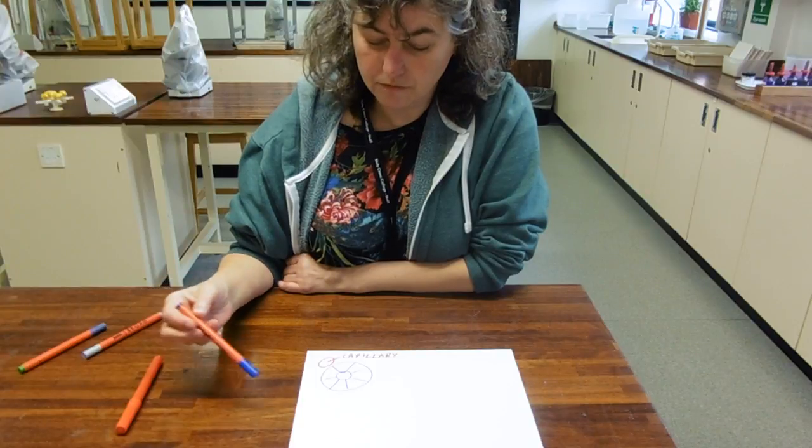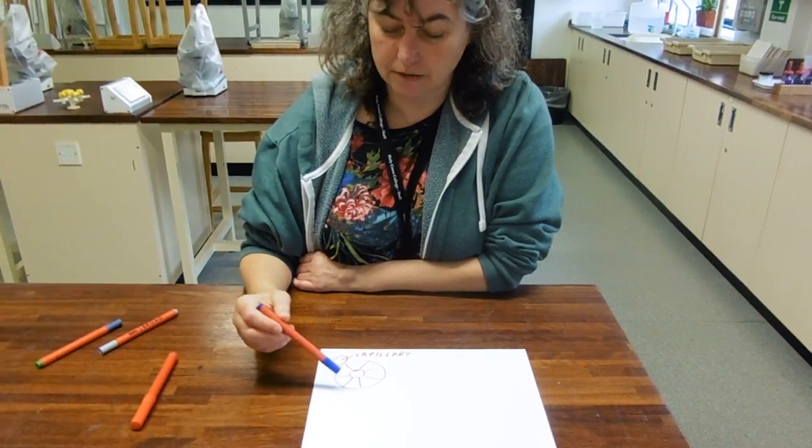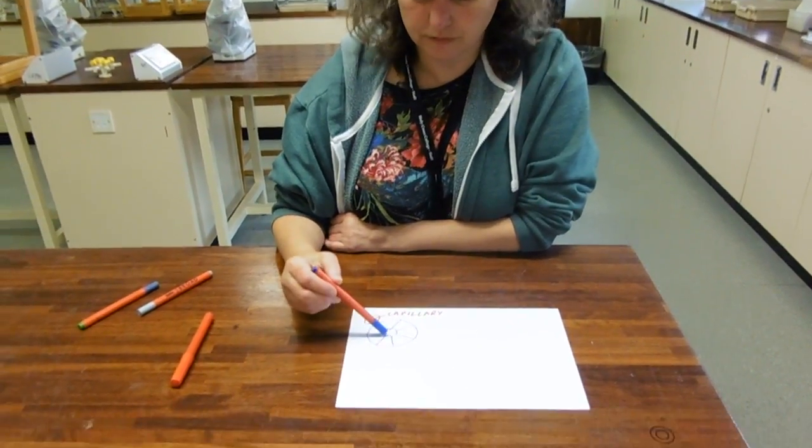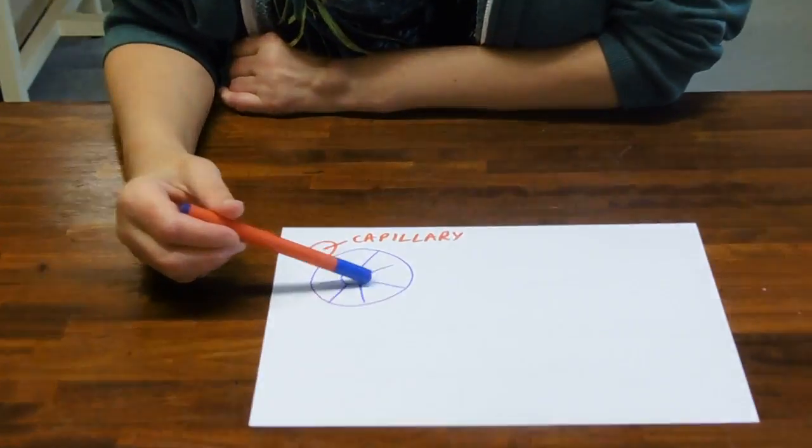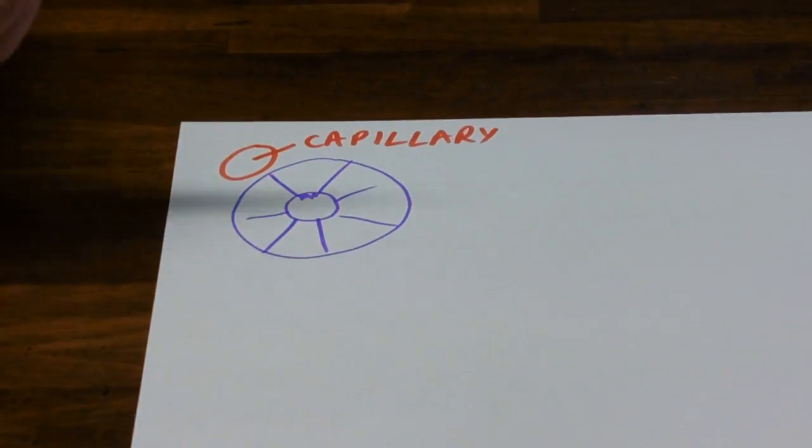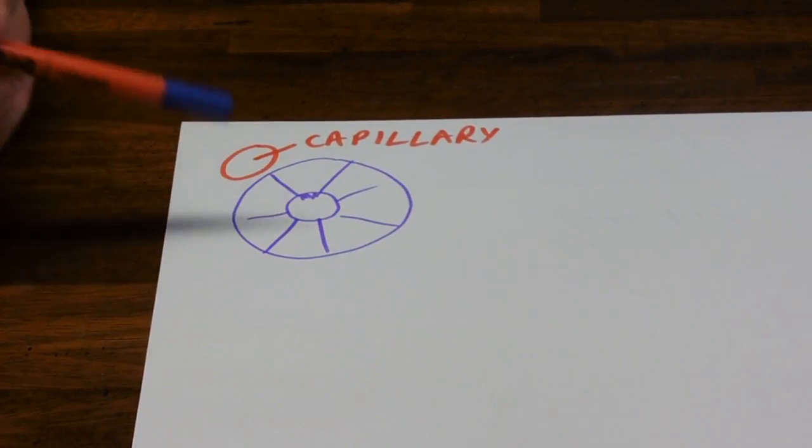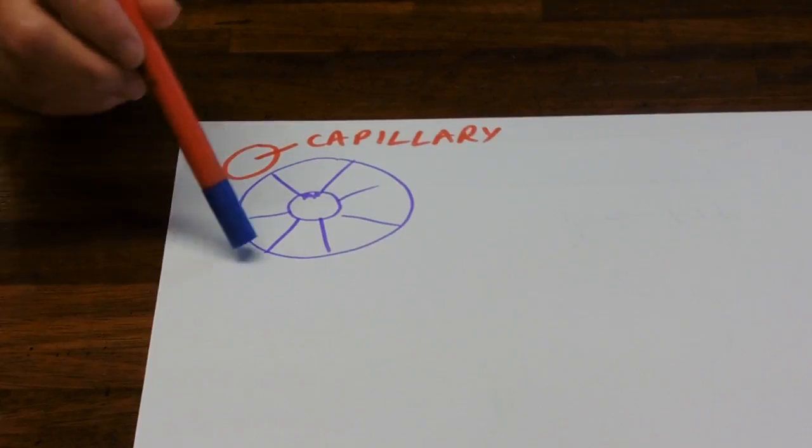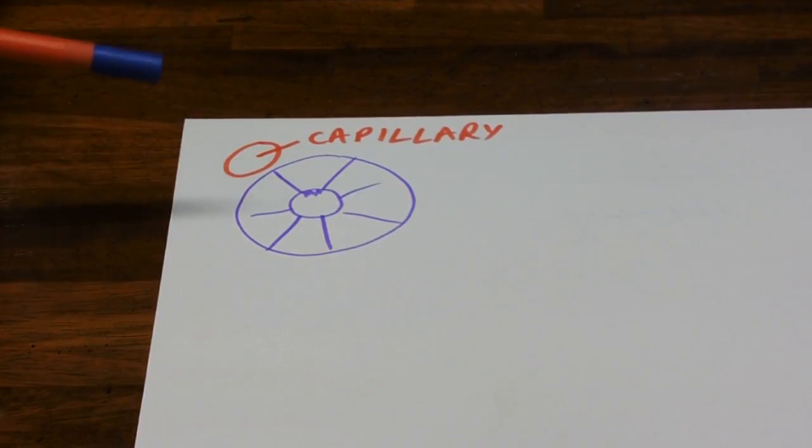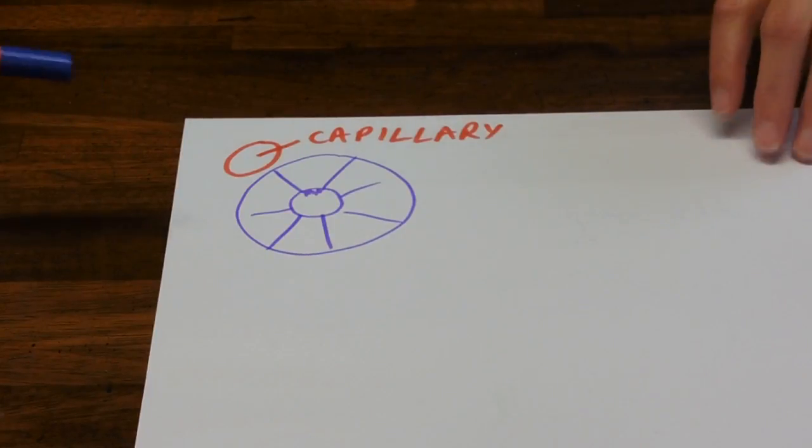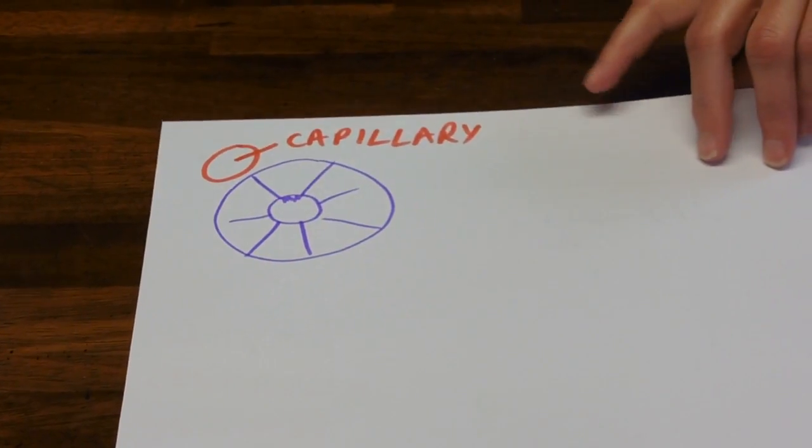So the proximal convoluted tubule, when you look at them down the microscope, they look round with little holes down the middle and the inside edges next to the lumen look a bit furry and we'll see why in a minute. And in between the tubules you've got capillaries, and these are the peritubular capillaries—peri meaning around, tubular around the tubules, capillaries because they're capillaries.